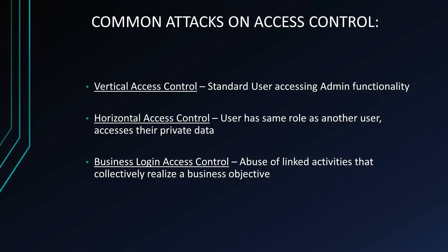There are three types of common attacks on access control. Vertical access control is where a standard user tries to move up to administrator functions. Horizontal access control is where a user has the same role as another user and attempts to access their private data. Business logic access control involves abuse of linked activities that collectively realize a business objective, allowing the attacker to expand into other areas.